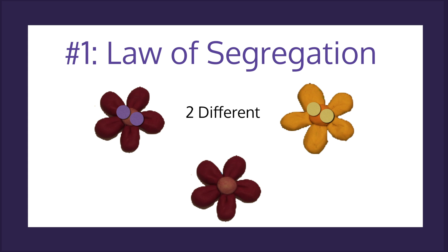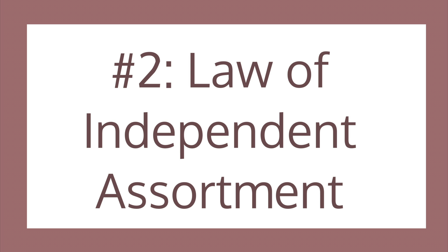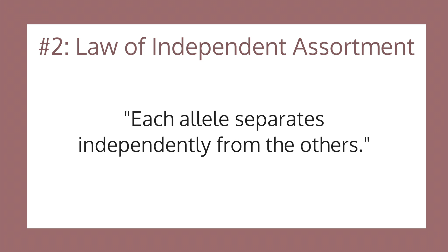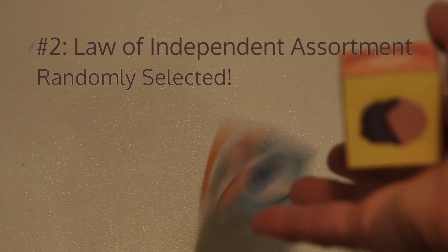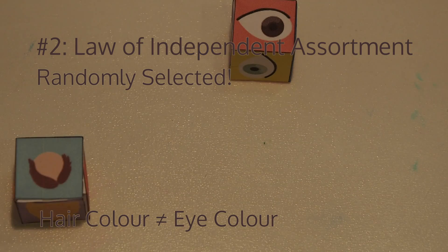But if we were to take the white and purple purebred plants and breed them, the pea child would have one white flower allele and one purple flower allele. When an organism has two different alleles, it is known as heterozygous. The second of Mendel's laws is known as the Law of Independent Assortment. This law states that each allele separates independently from the others. This means that the traits that separate your alleles for hair color do not affect the separation of your alleles for eye color.